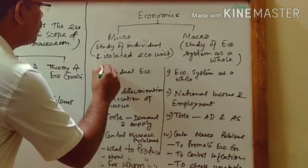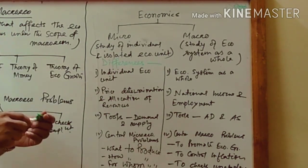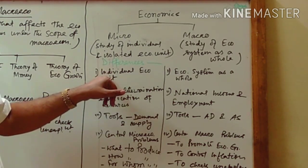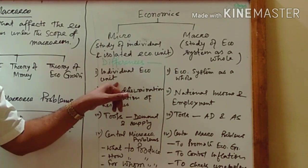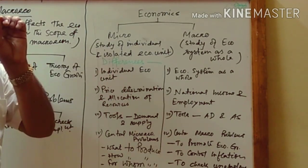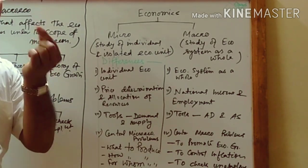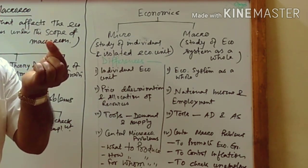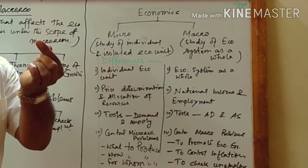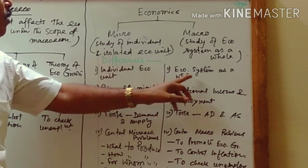Now let us look at the differences between microeconomics and macroeconomics. The first point of difference is that microeconomics is the study of an individual and isolated economic unit — completely one unit only. For example, in our country there are so many students, but if I am talking about one student that is micro, and all students in the country as a whole that is macro. Another example: in a forest, one tree is micro and all the trees in the forest are macro.